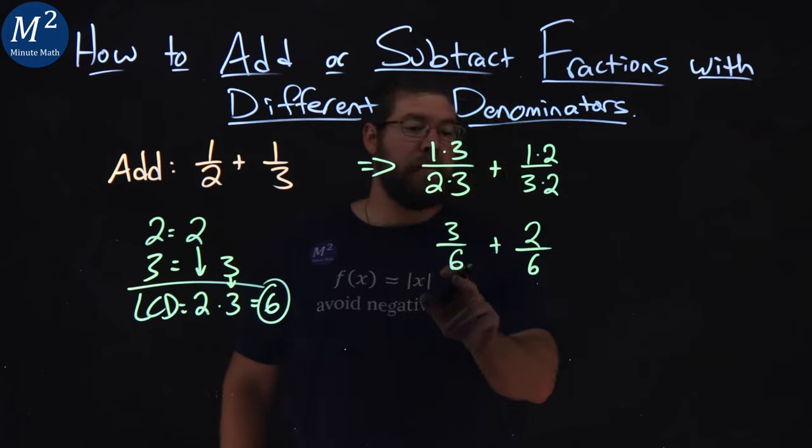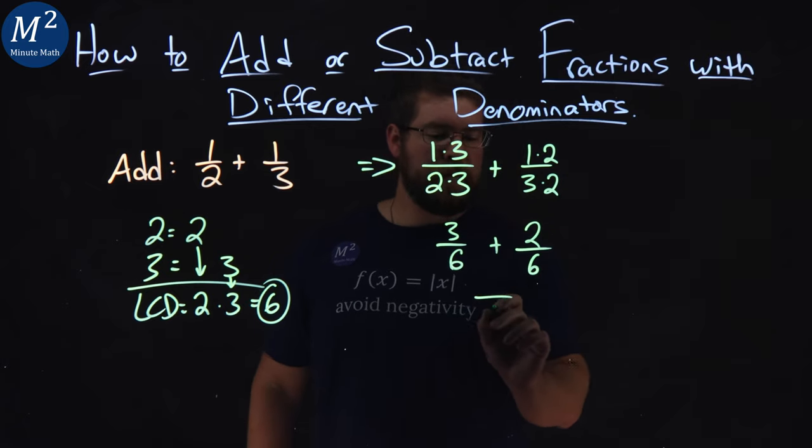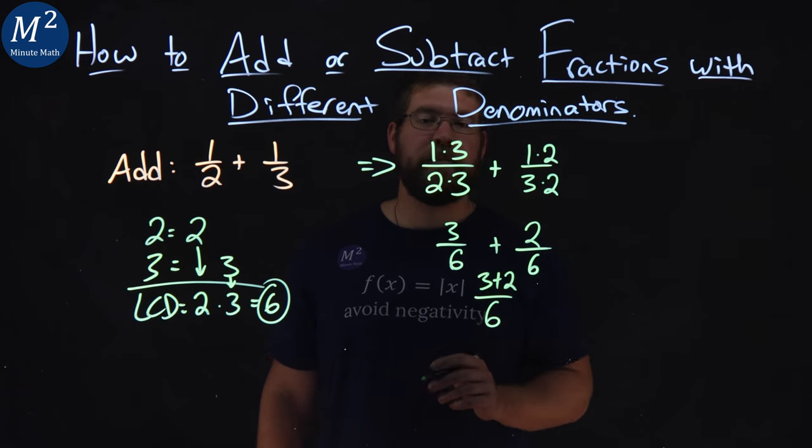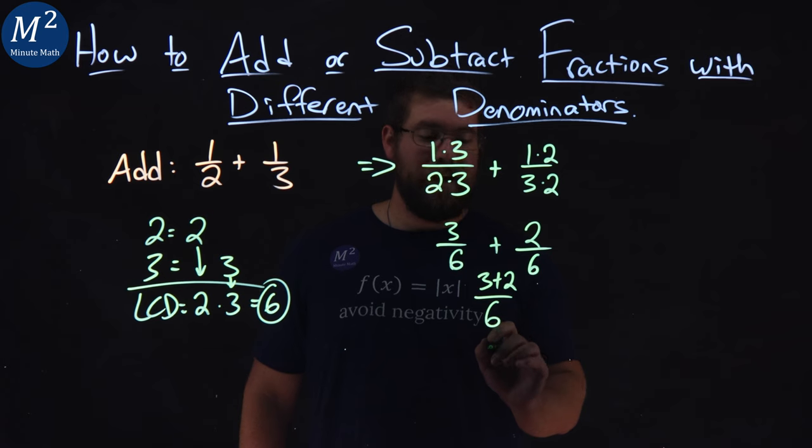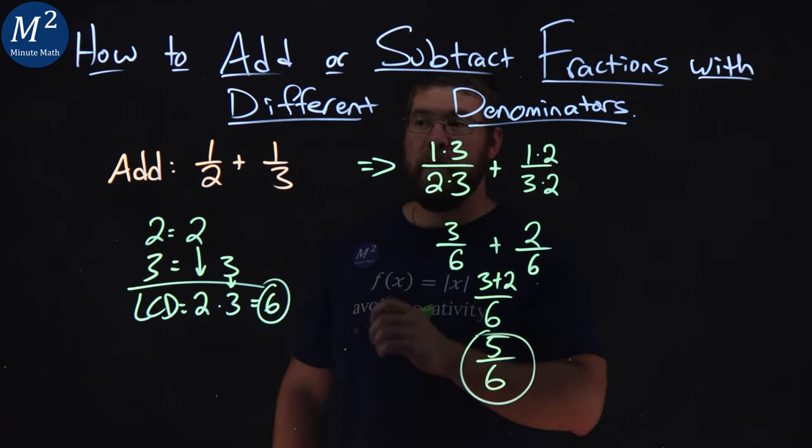From here, we have a common denominator. That was the whole point. And so with that, we keep that denominator of 6. We add the numerators, 3 plus 2. 3 plus 2 comes out to be 5. So we have 5 sixths here, and there we have it.